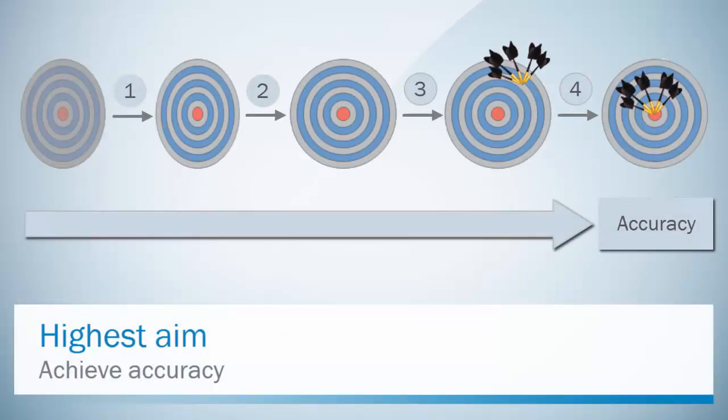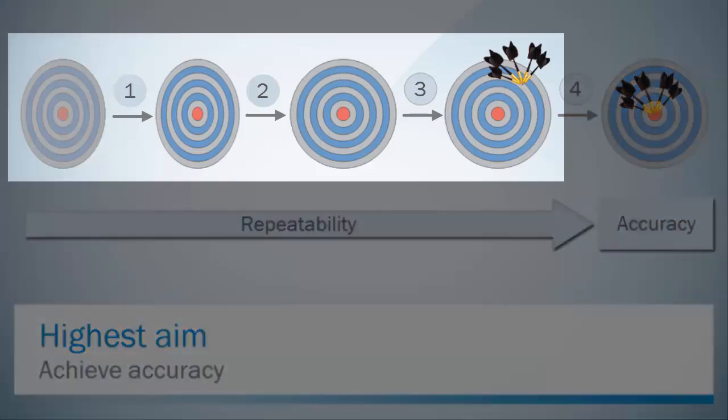A prerequisite to achieve high accuracy is to get good repeatability. Repeatability is achieved by three main steps: securing consistent environmental conditions, eliminating distortions that appear from mounting and lens characteristics, and applying accurate measurement analysis.